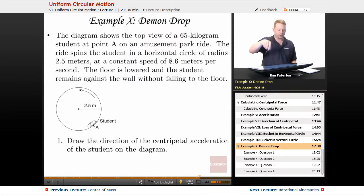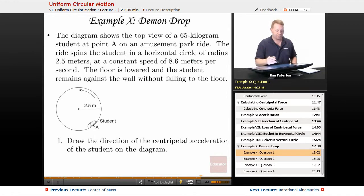The ride spins a student in a horizontal circle of radius two and a half meters at a constant speed of 8.6 meters per second. While that's happening, the floor is lowered and the student remains against the wall without falling to the floor. There's no floor there, but the student remains against the wall.